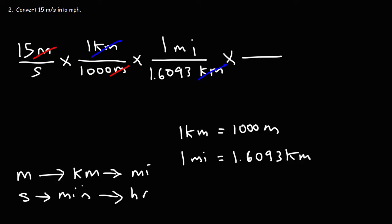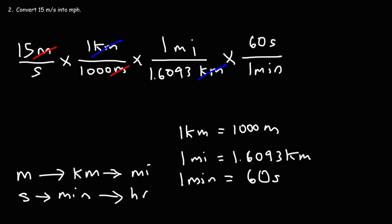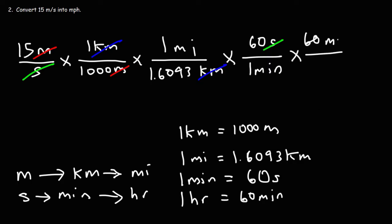Next, let's convert seconds to minutes. We know that one minute is equal to 60 seconds. We have seconds on the bottom, so we're going to put 60 seconds on top, and one minute on the bottom, so now we can cross out the unit seconds. Finally, we need to convert minutes to hours. We know that one hour is equal to 60 minutes, so we're going to put 60 minutes on top and one hour on the bottom. So now the unit minutes cancel, and we're left with units of miles per hour, which is what we want.